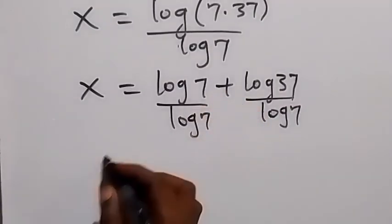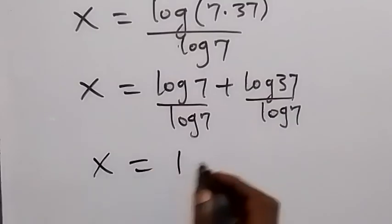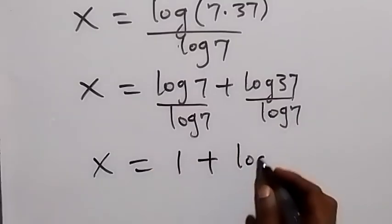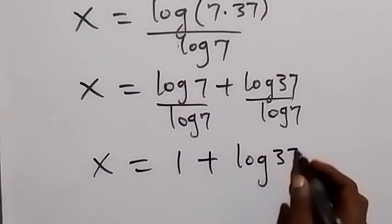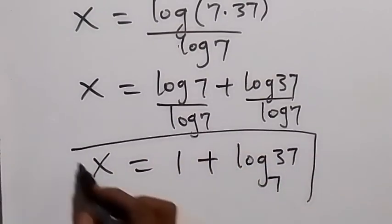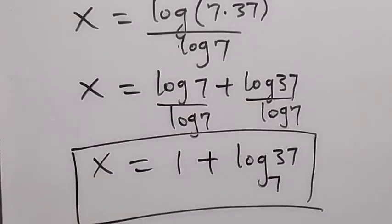So we have x equals to 1 plus here we can write this again as log 37 base 7. Change of base. And here we have the final answer as x equals to 1 plus log 37 base 7.